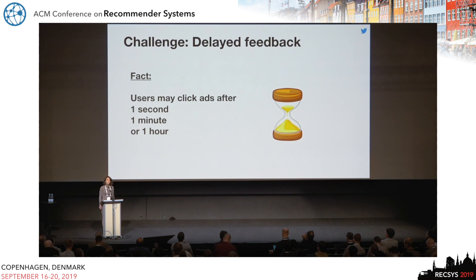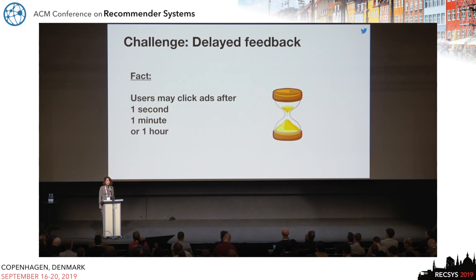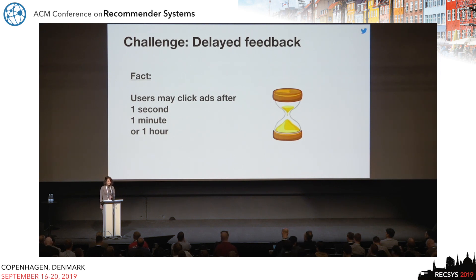The problem that we face with continuous training is that the ground truth labels are not available straight away. As soon as an ad is displayed to a user, the user might click on it within one hour or even longer after the ad is displayed. So as soon as we introduce the samples to the models, we don't know what the actual label is.